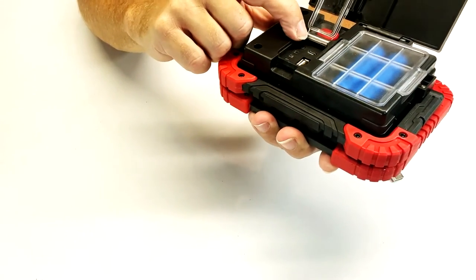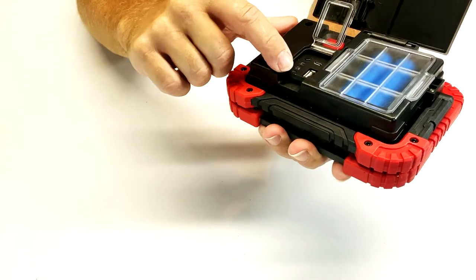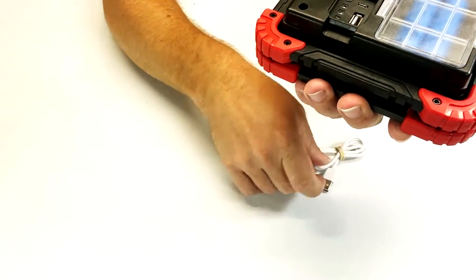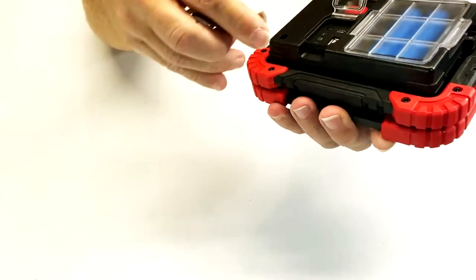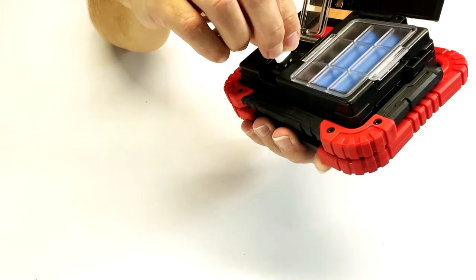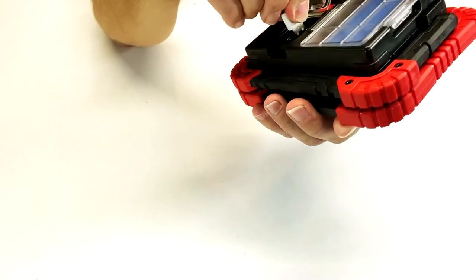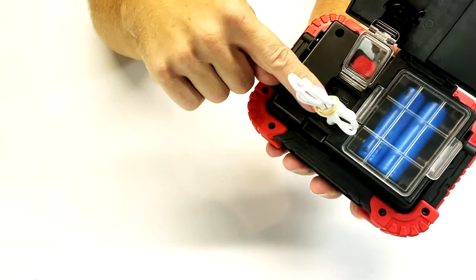You have an input, which is the micro USB port, and you have an output. If you have your charging cord for your phone or your other devices, you can just plug it in your output.